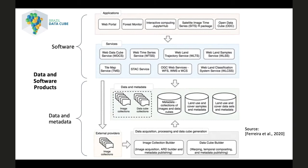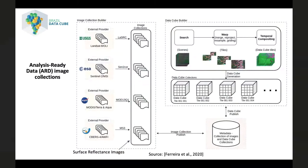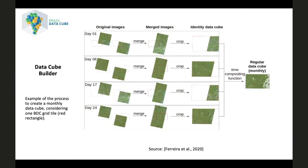To create the analysis-ready data, we are getting the images from external providers such as USGS and ESA, and using the software provided by them, such as LaSRC and Sentinel-cor, to create surface reflectance of these images. From these surface reflectance images, we are creating data cubes in three steps: search, warp, and temporal composition. This picture shows an example of the process to create a monthly data cube in one grid tile.